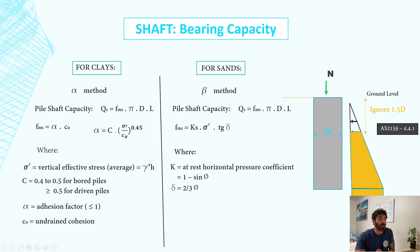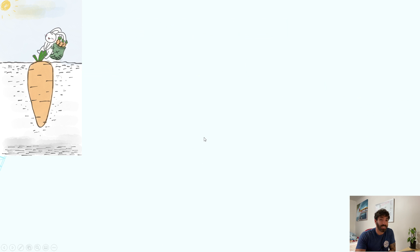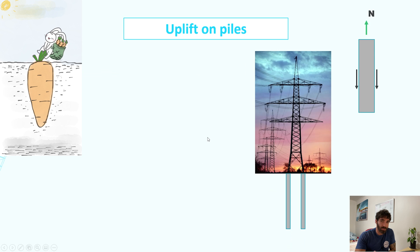Uplift on piles. Let's suppose you have a transmission tower to design. When the wind blows in this direction, you will get uplift force in this pile, so you need to quantify this force and design the pile to take these loads.